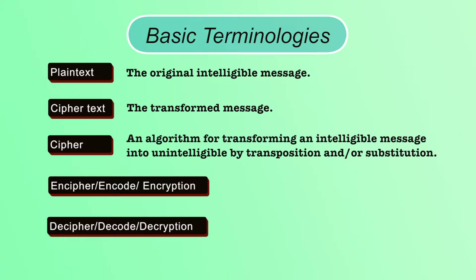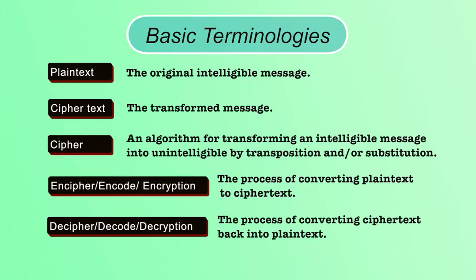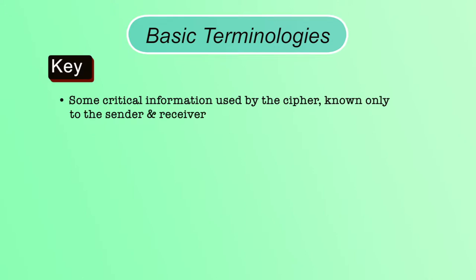Encipher, or encoding, or encryption is the process of converting plaintext to ciphertext. The algorithm we are using is called cipher, and the process for conversion is called encryption or enciphering or encoding. Decipher, decoding, or decryption is the process of converting ciphertext to plaintext. Key is a critical piece of information used by the cipher to convert plaintext to ciphertext — it is a random string of characters.